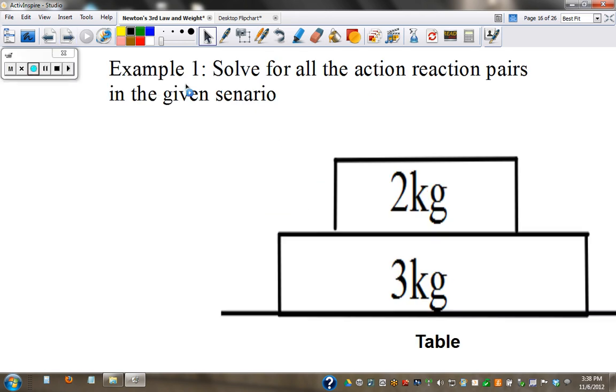So, let's try this. Solve for all the action-reaction pairs in the given scenario. Here's your list. We have force A on B, that's one, and then the reaction. And then number two is force AB on table. See if you can solve them. And then here's your answers. Pause the video.